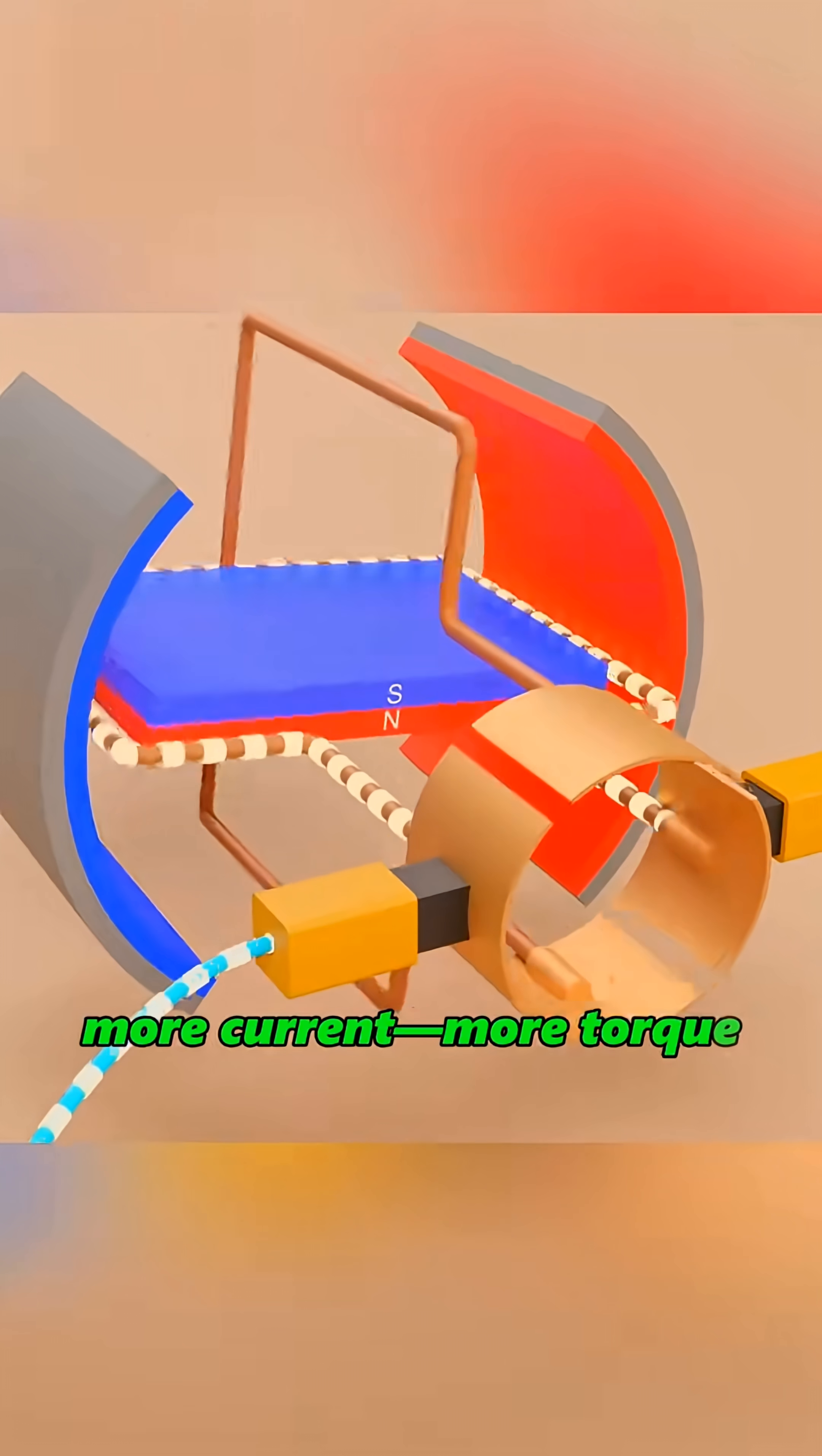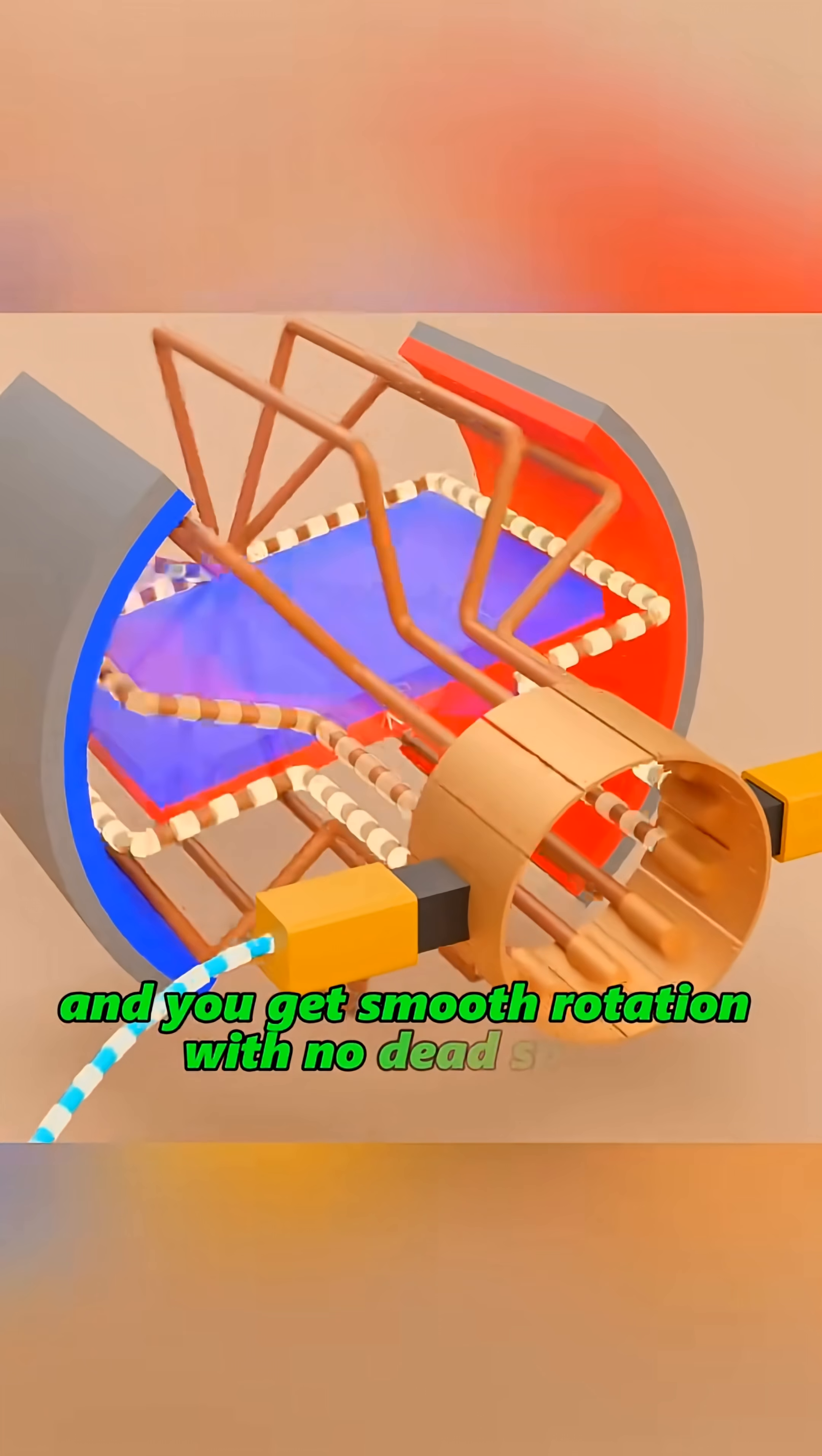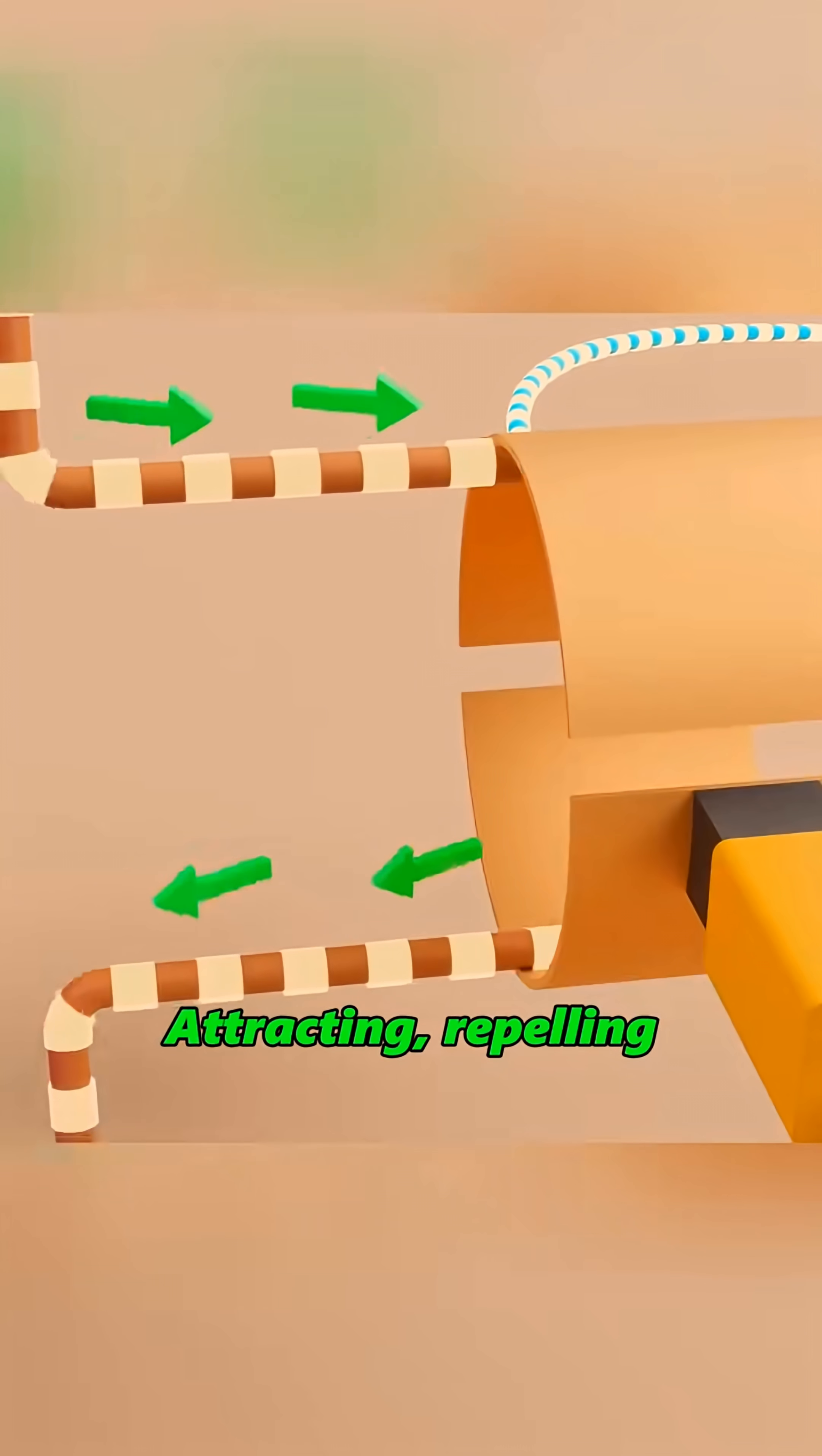More windings, more wire, more current, more torque. Stack multiple coils at different angles and you get smooth rotation with no dead spots. Call the parts whatever you want - rotor and stator, brushes and slip rings, attracting, repelling.